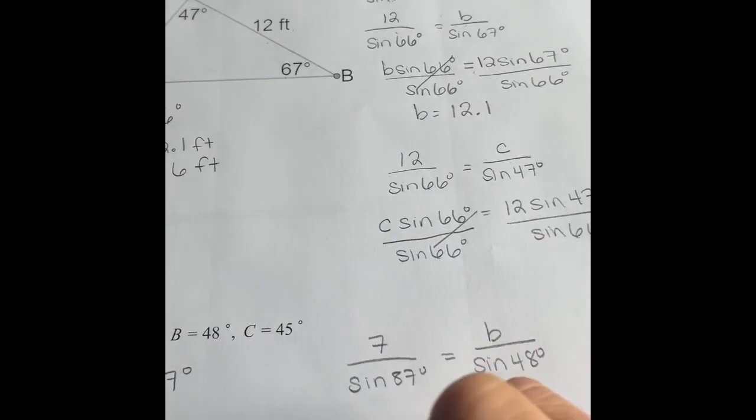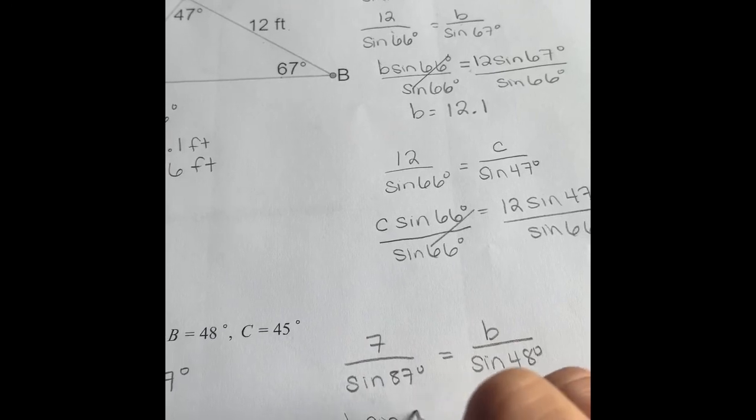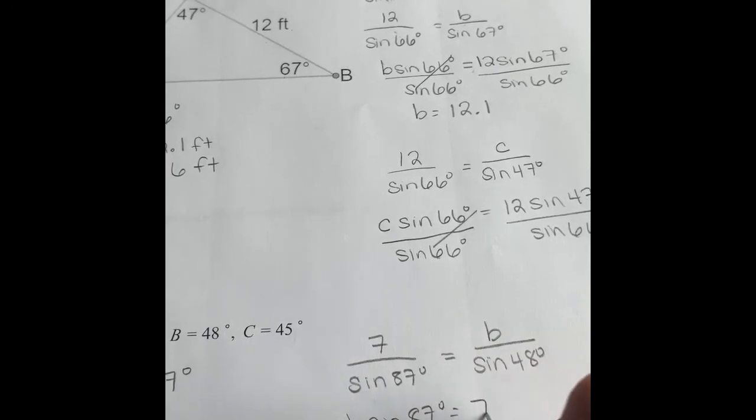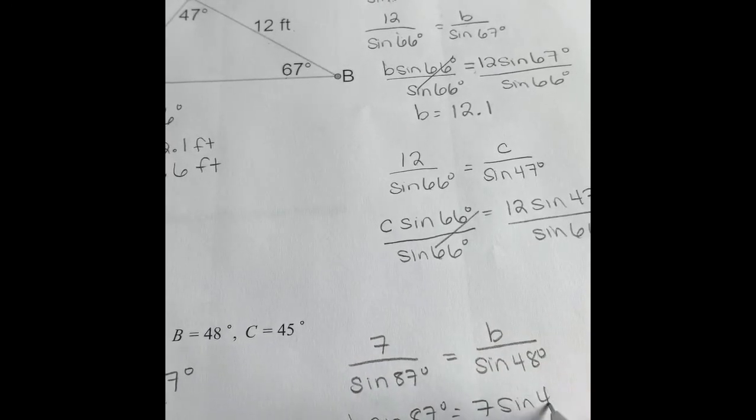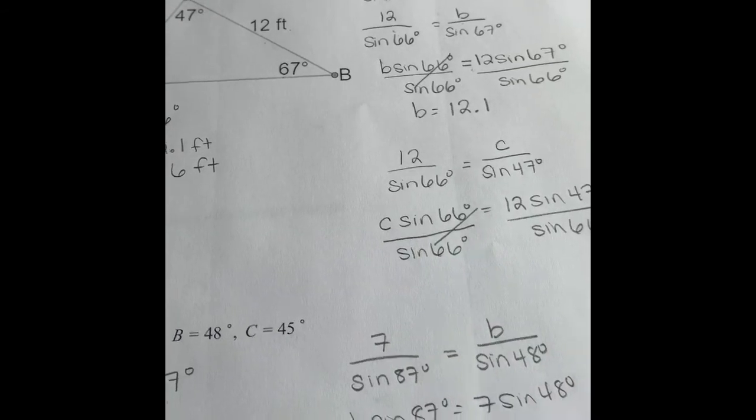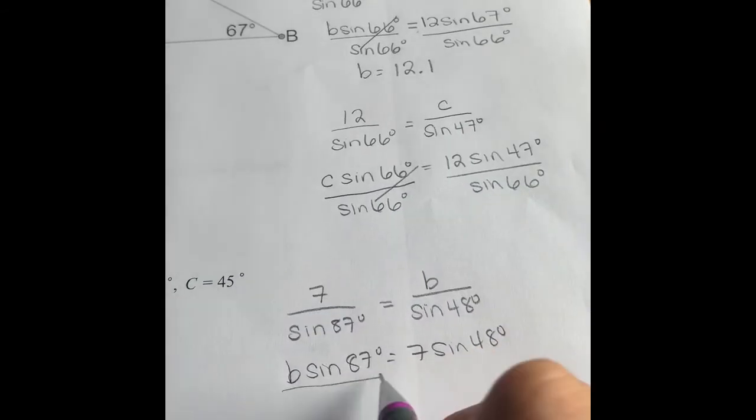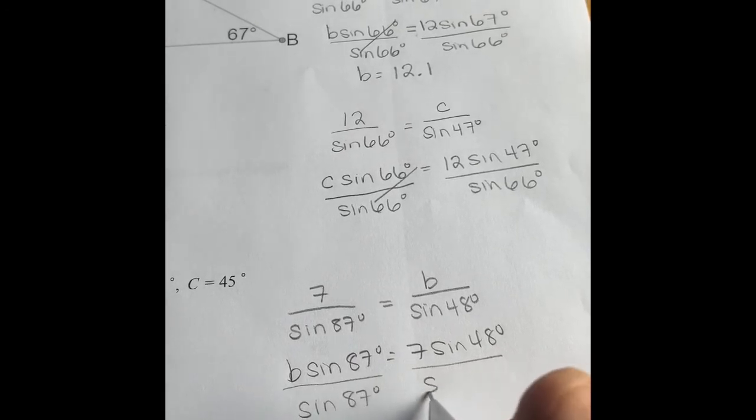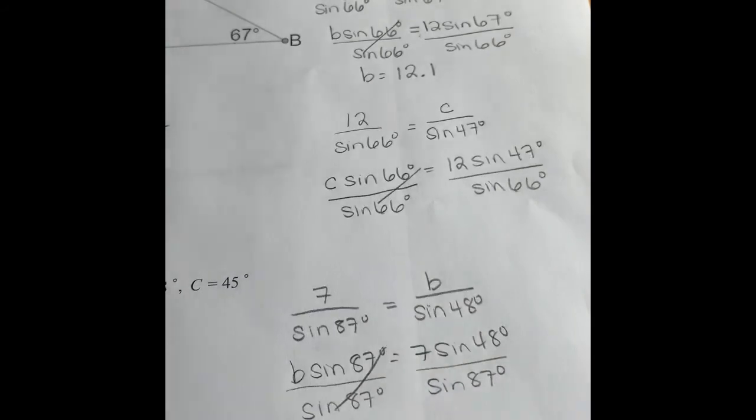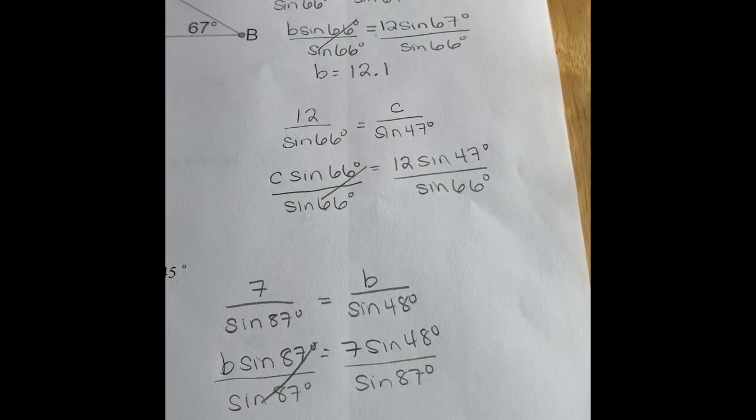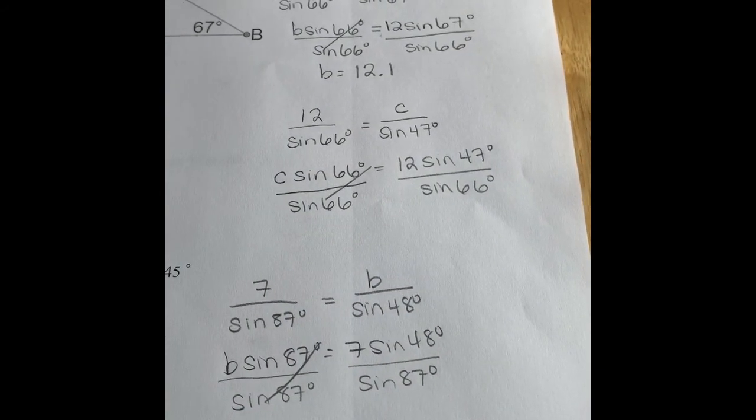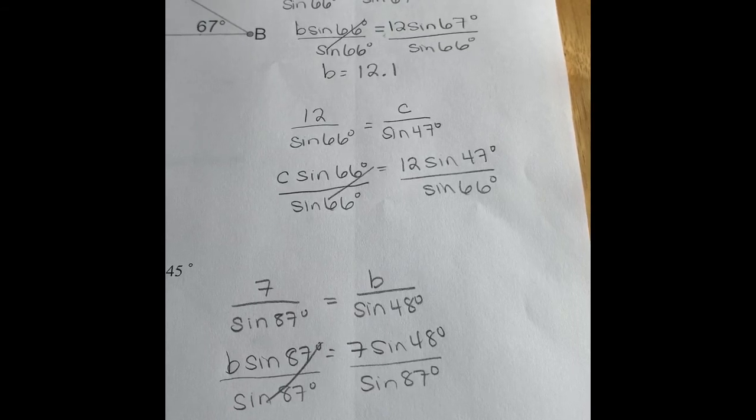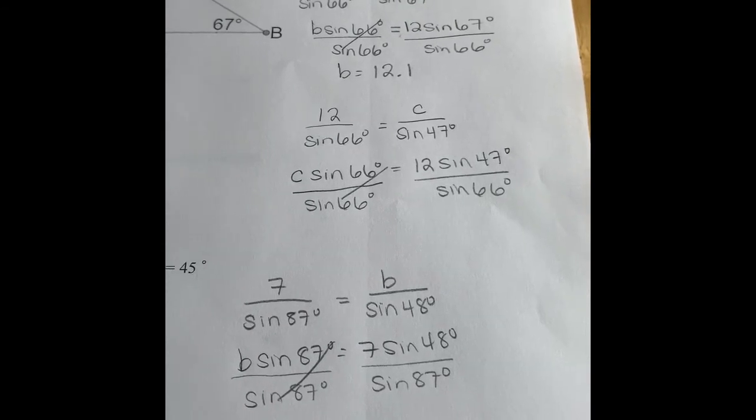Cross multiply. So B times the sine of 87 degrees equals 7 times the sine of 48 degrees. And then, of course, we have to divide both sides by the sine of 87 degrees. So if we type that into the calculator, 7 times the sine of 48 degrees entered, divided by the sine of 87 degrees. Rounding to the nearest tenth, make sure you read the directions in the assignment so you know how to round.